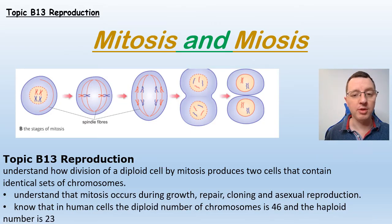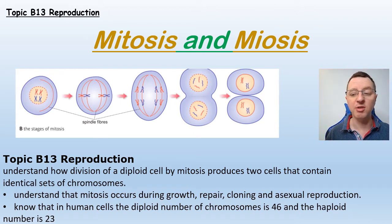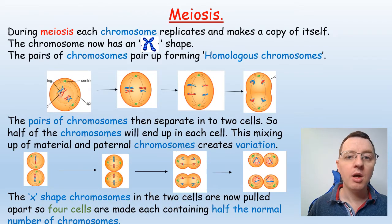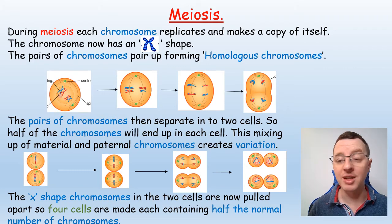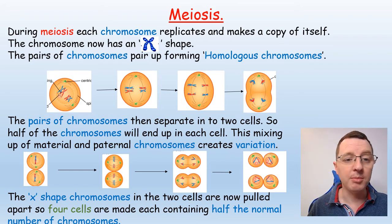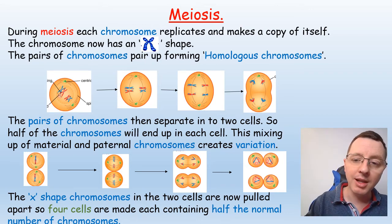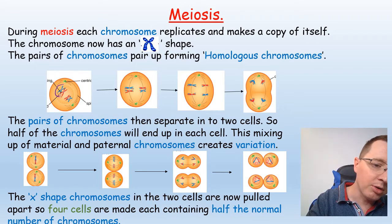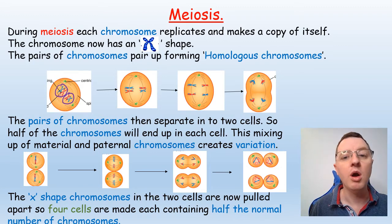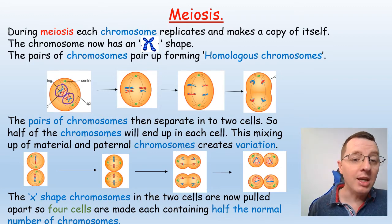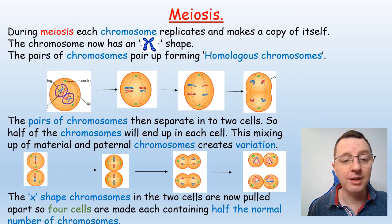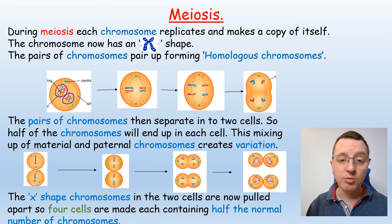But what about the opposite process — meiosis? How can you produce gamete cells which contain half the normal number of chromosomes and are haploid? During meiosis each chromosome will replicate and make a copy of itself in the interphase, giving that X shape. Then the pairs of chromosomes pair up and form homologous chromosomes in the first phase. Occasionally at this point you can get crossing over, where a section of one chromosome breaks off and rejoins with its opposite pair.